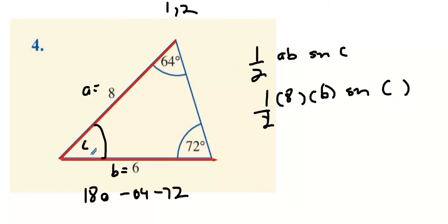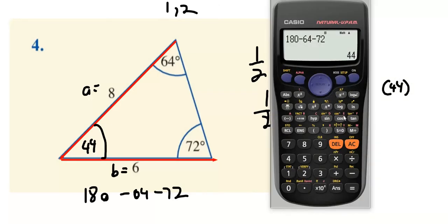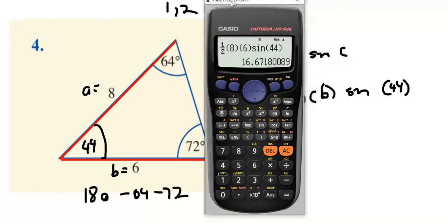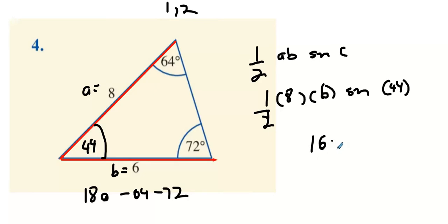So now it's one half times 8 times 6 sine 44. Follow that into your calculator, so it's going to be one half, 8 times 6, sine 44. 16.67 to two decimal places. So 16.67 centimeters squared.